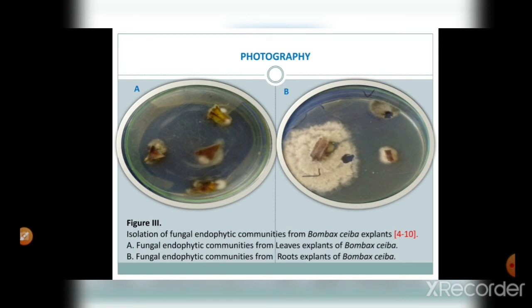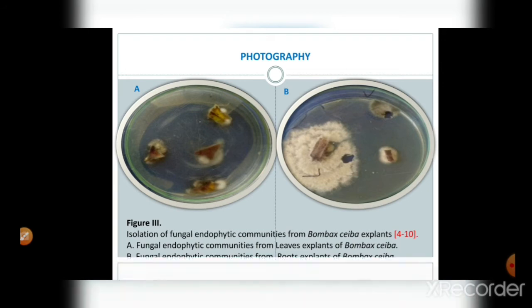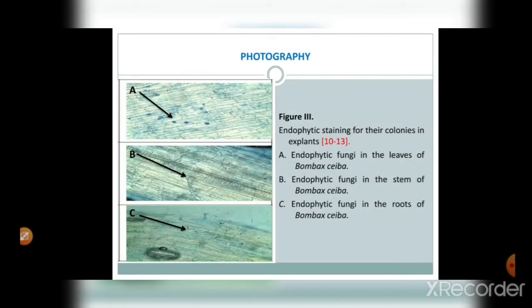Plate A shows the fungal endophytic communities from leaf explants of Bombax ceiba, and Plate B shows the fungal endophytic communities from root explants of Bombax ceiba. The photography section shows endophytic fungi present inside the plant explants, especially in the xylem and phloem. Images A, B, and C show endophytic fungi present inside the plants in different bodies.